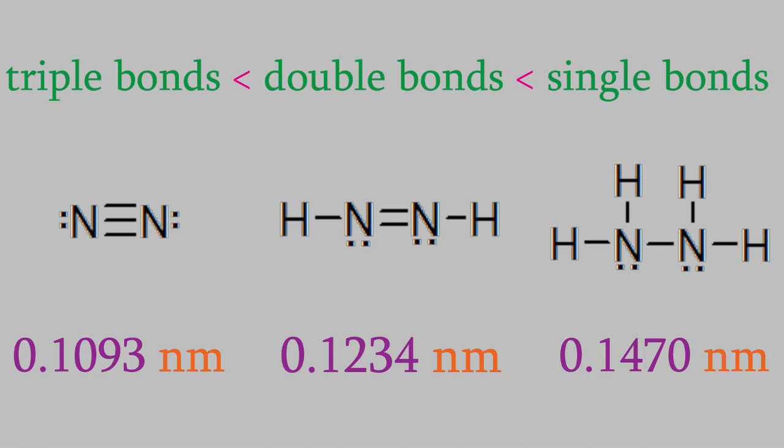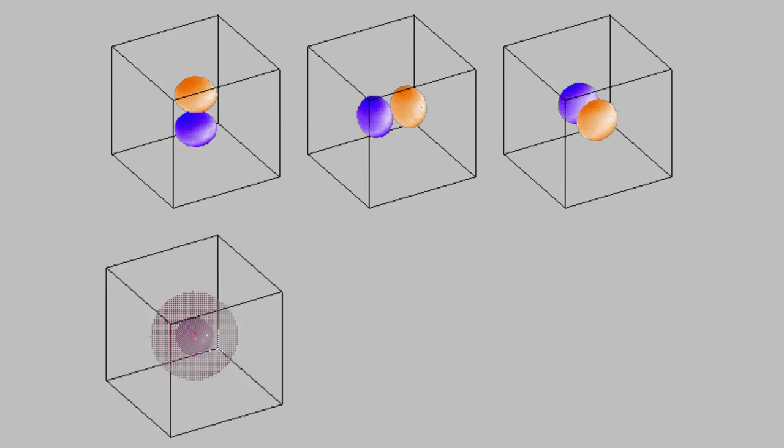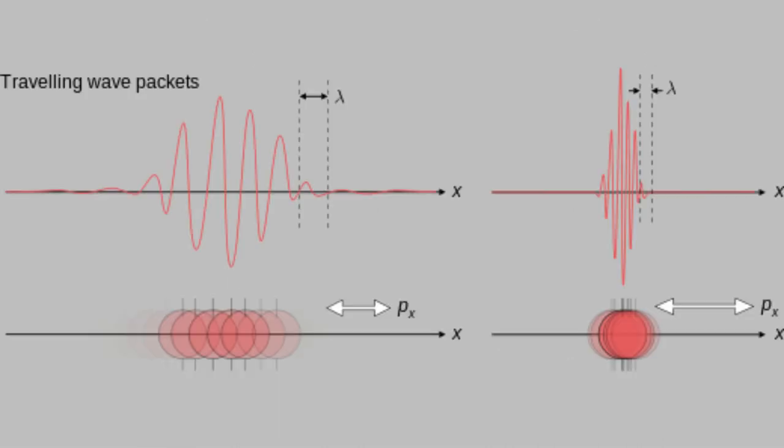One last thing you might have noticed. The three p orbitals are all at right angles to each other, and the s orbitals are spherical. So, how is it that we can get some of the shapes that we saw in the last video? For example, how can we have a tetrahedral molecule, like methane, where the bond angle is 109.5 degrees? The key is to remember something I said earlier in this video. Electrons behave like waves, not particles.